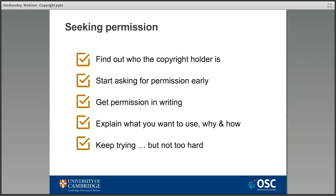It's important that you explain exactly what you want to use, why you want to use it, and how it's going to be used. This is called informed open consent — so you can prove that people knew exactly what they were agreeing to. A creator might be fine with you using their work for an academic assignment that only a few people are going to see, but publishing that online is a different thing and they might not be happy with that. For a thesis you need to say you're going to use this in your thesis and that the thesis is going to appear online in the Cambridge repository, just so they know what they're agreeing to.